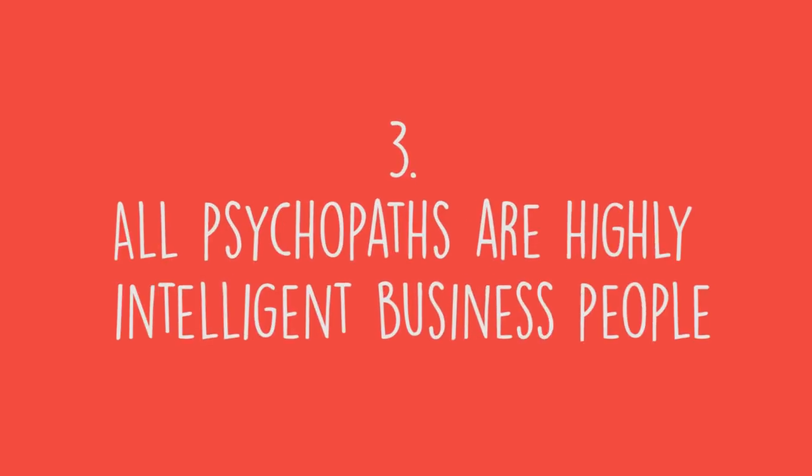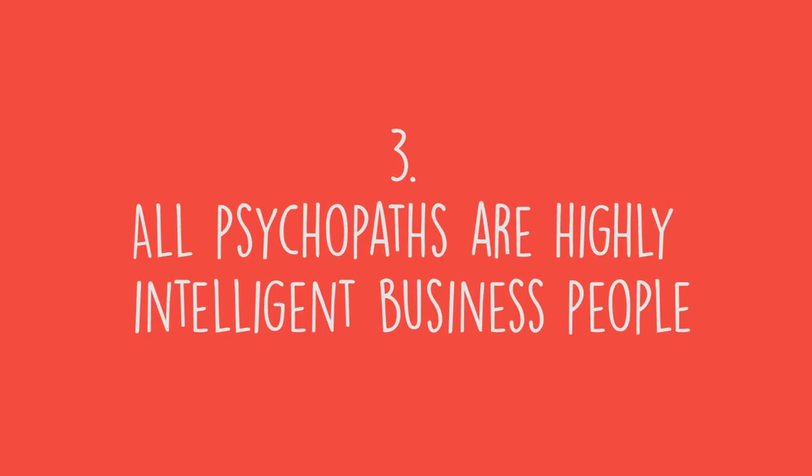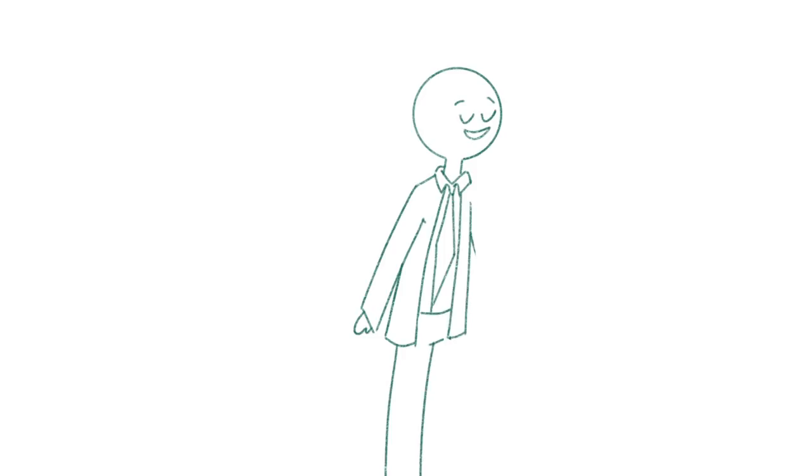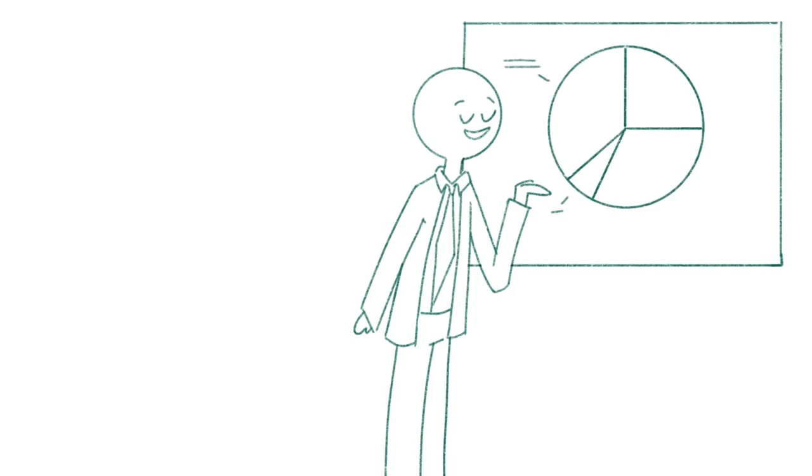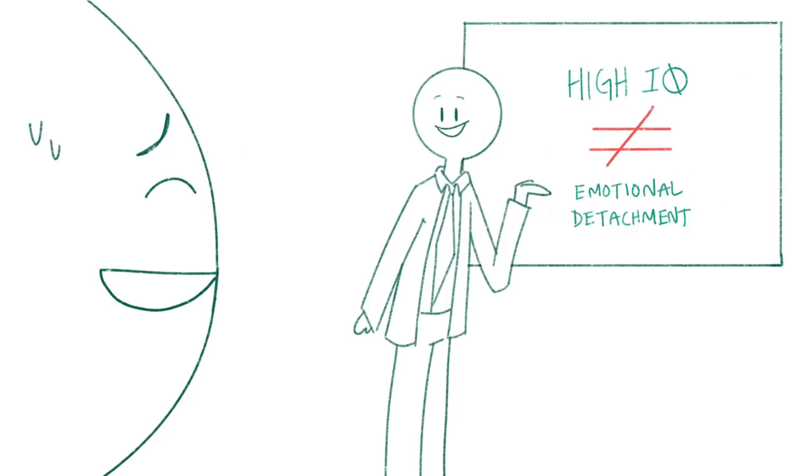Number three: All psychopaths are highly intelligent business people. People probably try to pin this one on their boss if they hate their job, but the truth is, high intelligence has nothing to do with psychopathy. Although psychopaths can be incredibly charming and manipulative, this does not mean they necessarily have higher IQs than the average person. So, why does this myth continue to exist? Case studies have shown that people often link higher intelligence to emotional detachment and a disagreeable nature. But these personality traits alone do not determine higher intelligence.